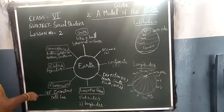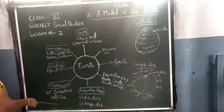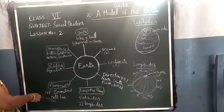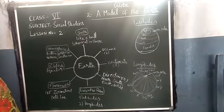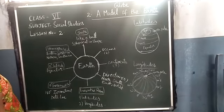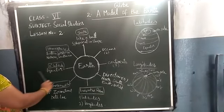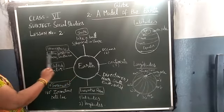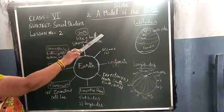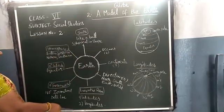180 degrees is the International Date Line. Then, what are the lines of the globe? Children, you look at the lines of the globe — what are they?